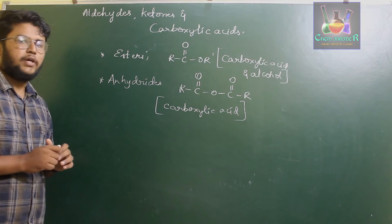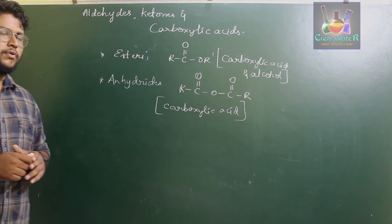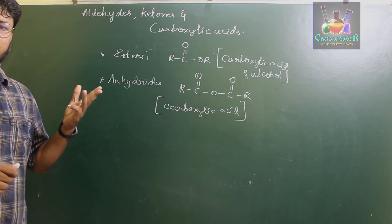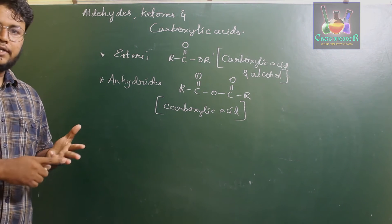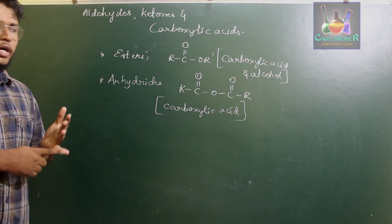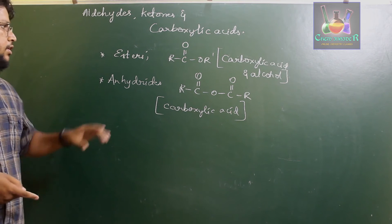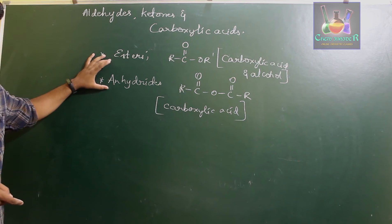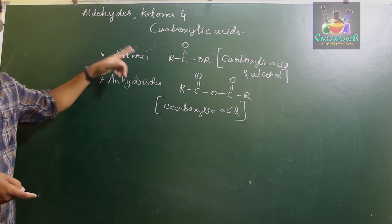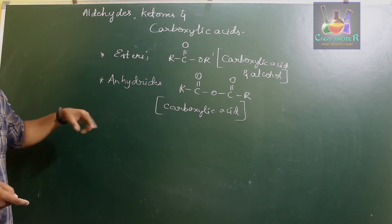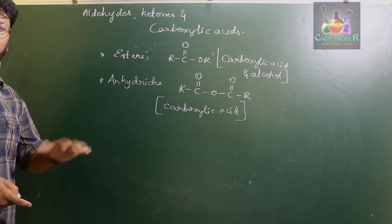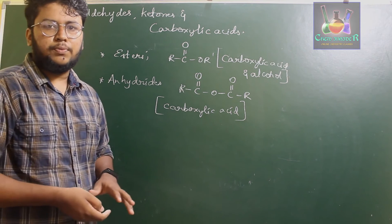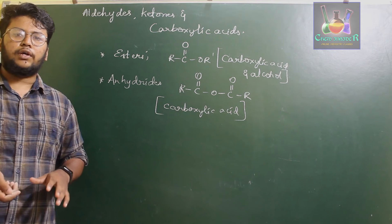So in total, we have six to seven types of carbonyl groups: aldehydes, ketones, carboxylic acids, amides, acyl halides, esters and anhydrides. Esters and anhydrides are nothing but the derivatives of carboxylic acid with alcohol and carboxylic acid with another carboxylic acid respectively — which may be the same or different.